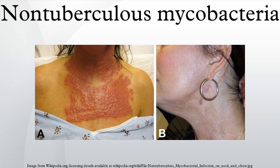Diagnosis of opportunistic mycobacteria is made by repeated isolation and identification of the pathogen with compatible clinical and radiological features. Similar to M. tuberculosis, most non-tuberculous mycobacteria can be detected microscopically and grow on the Löwenstein–Jensen medium. Many reference centers now use a nucleic acid-based method such as sequence differences detection in the gene coding for 16S ribosomal RNA to identify the species. Pulmonary NTM disease diagnosis requires both identification of the mycobacterium in the patient's lung as well as a high-resolution CT scan of the lungs.